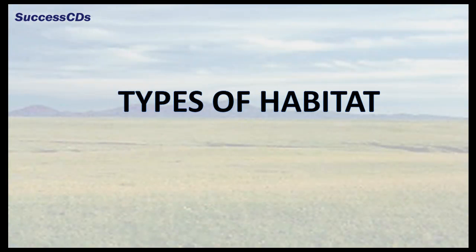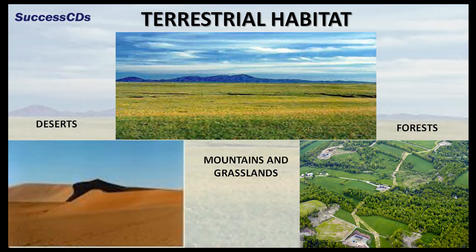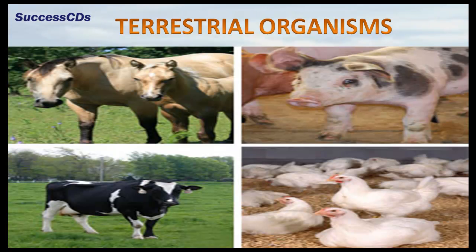Living things live on land, in water, or on trees. Based on this, habitats are of the following types. Terrestrial habitat consists of habitats on land like mountains, grasslands, forests, and deserts. Organisms that live on land like horse, pig, cow, hen, etc., are terrestrial organisms.